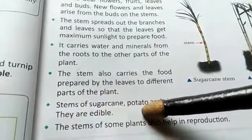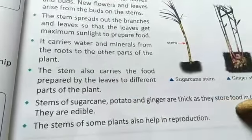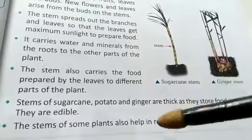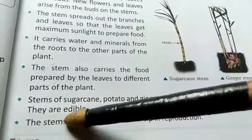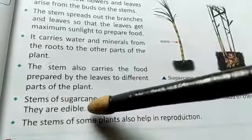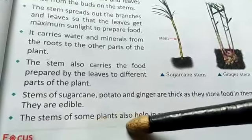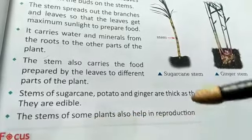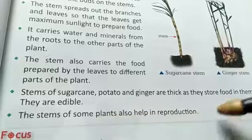Stems of sugarcane, potato, and ginger are thick as they store food in them. We eat these stems as vegetables. Lastly, the stem of some plants also helps in reproduction.